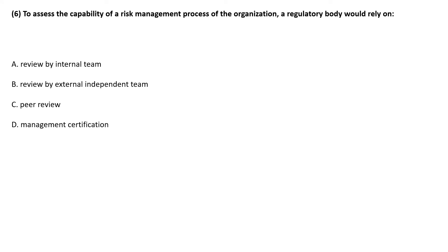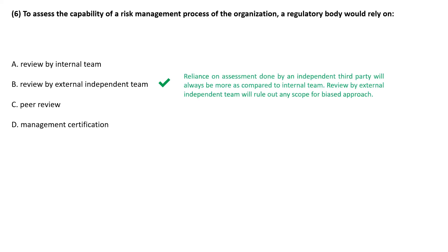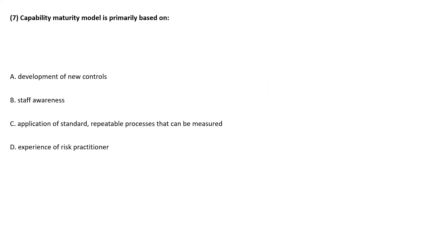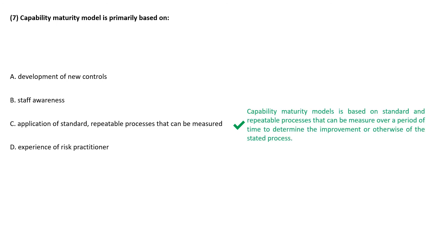To assess the capability of a risk management process of an organization, a regulatory body would rely on an independent team — this removes biasness. The Capability Maturity Model is primarily based on the application of standard, repeatable processes that can be measured. This helps to determine the improvement or otherwise of the stated process.